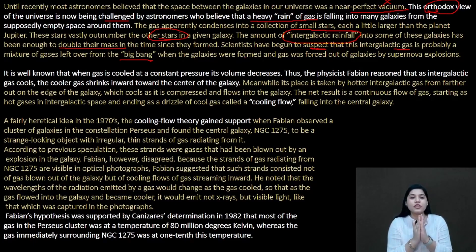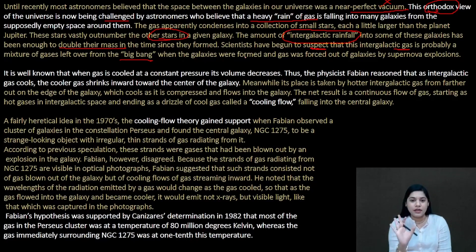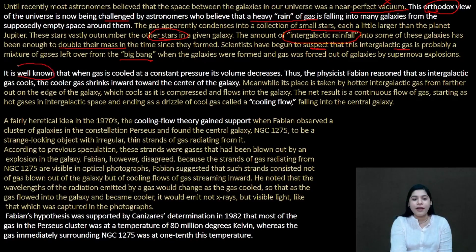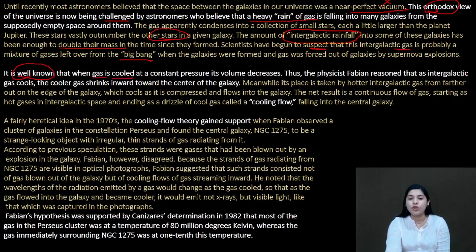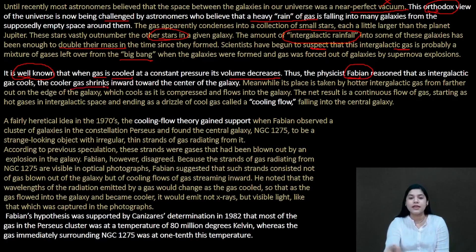Basically, the first paragraph talks about the view that space is a vacuum being challenged — there is a rainfall, a rain of gas. Now, paragraph 2: it is well known that if any gas cools at a constant pressure, its volume decreases. So physicist Fabian reasoned that as intergalactic gas cools, the cooler gas shrinks inward towards the center of the galaxy. When the gas is hot, it stays out; as it cools, it comes in.